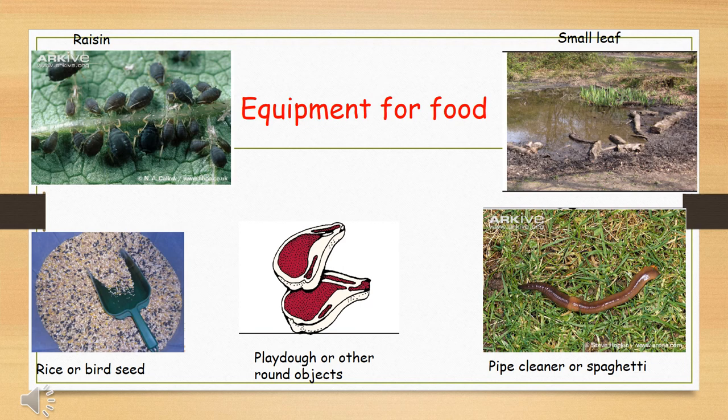For meat, you could use play-doh or other larger round objects. For worms, you could use a pipe cleaner, if you have that, or spaghetti. But with spaghetti, make sure you ask an adult to help you cook it first, so they're a bit more slimy. And then for the leaves, you could either use a leaf, or you could use grass, which would also work. So think carefully about what you have access to. And then you need to get that ready and prepared for next lesson.